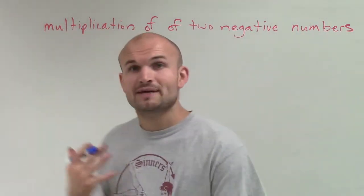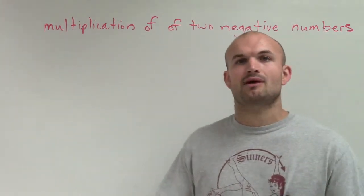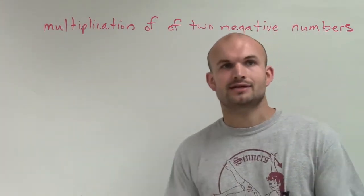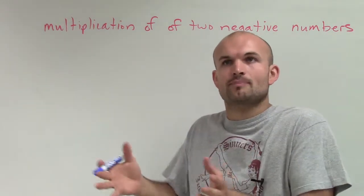We have the multiplication of two negative numbers. When we think about multiplication of two positive numbers, it's pretty easy. Two sets, you're just dealing with repetitive addition.